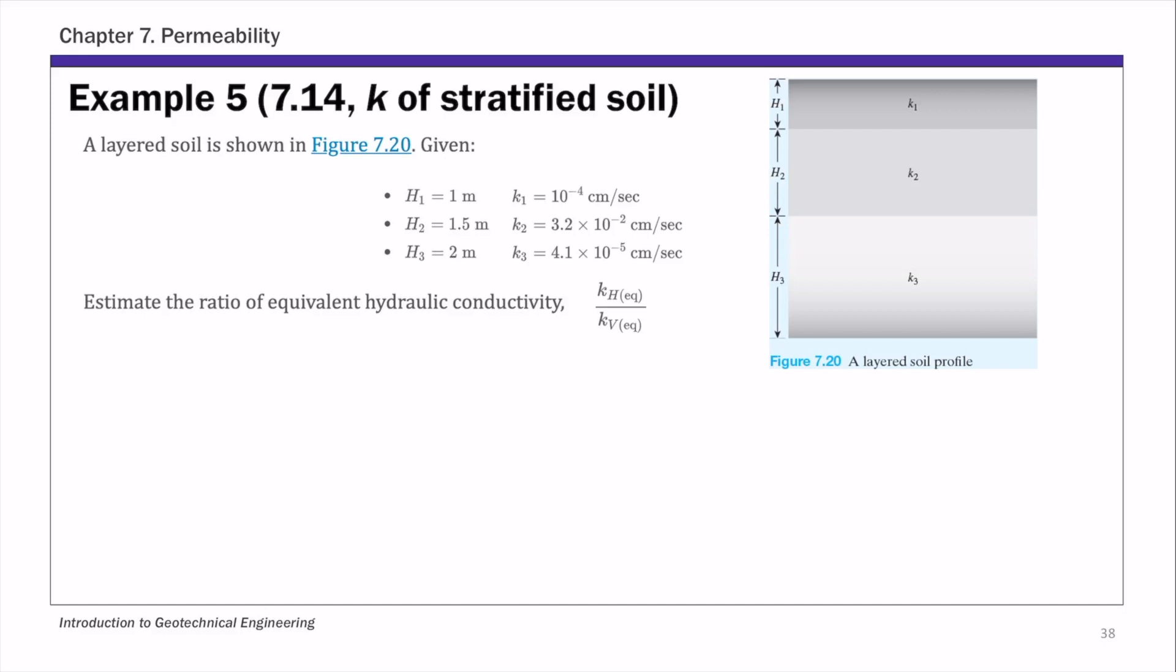This is example 5 of chapter 7 permeability. In this example we are dealing with hydraulic conductivity of stratified soils.